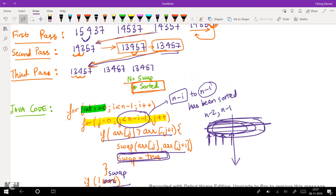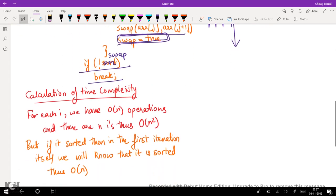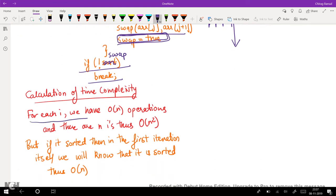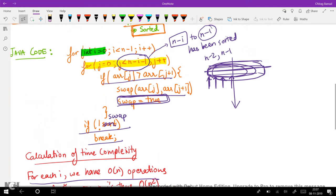So let's look at its time complexity. For each i we have O(n) operations, and there are n i's, so the time complexity is O(n²). As for each i...